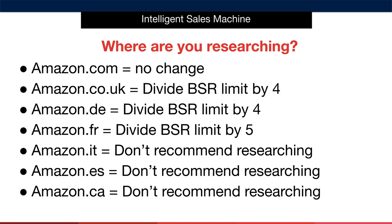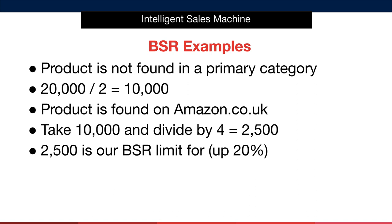Where you're researching will affect the BSR limit you're happy to work within. If you're researching on Amazon.com, you won't have to alter your calculations in any way. This means that if you're in a primary category on Amazon.com, the highest BSR you'll accept is 20,000, and if you're in any other country, it will be 10,000. I don't actually recommend doing any research in the Italian, Spanish, or Canadian markets, as they're too small and don't contain what we deem to be reliable data.